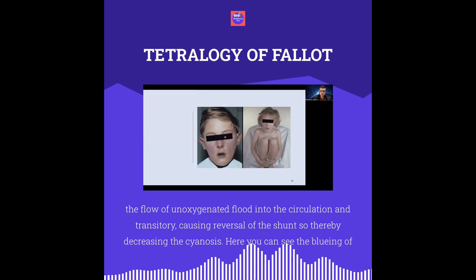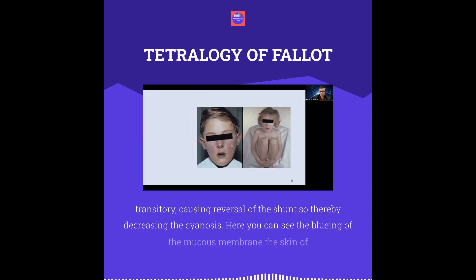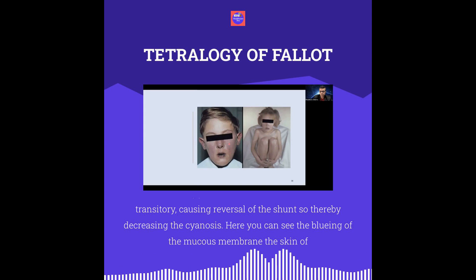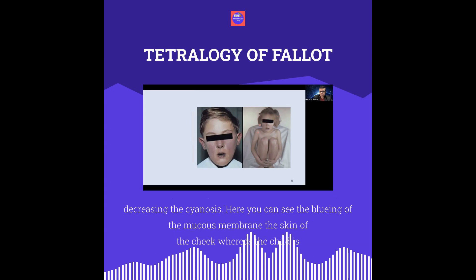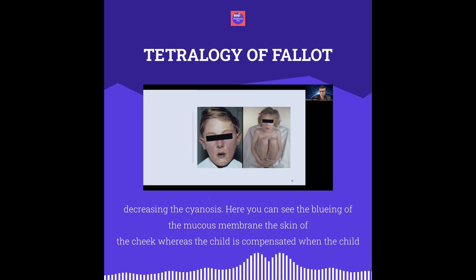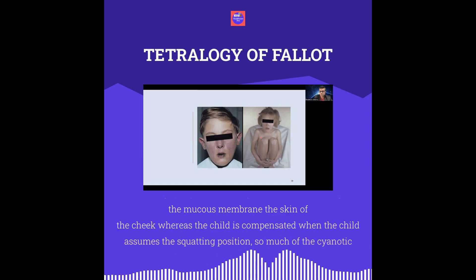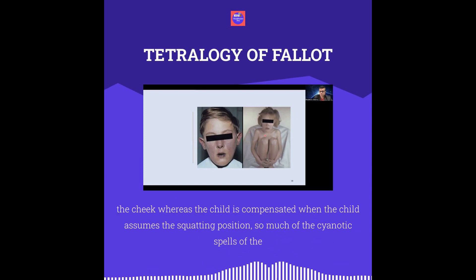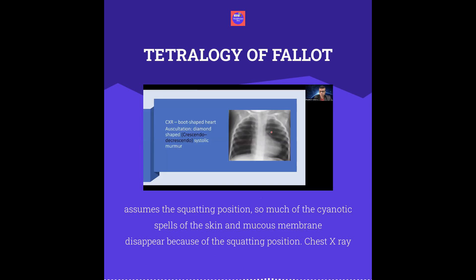Here you can see the bluish discoloration of the mucous membrane, skin, and cheeks. When the child assumes the squatting position, the child is compensated — much of the cyanotic events and the cyanosis of the skin and mucous membranes disappear because of the squatting position.